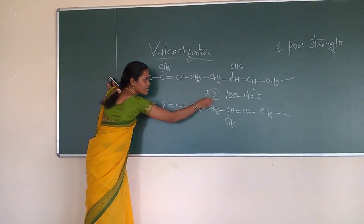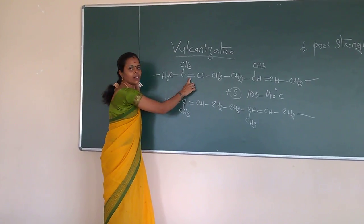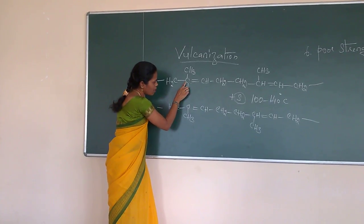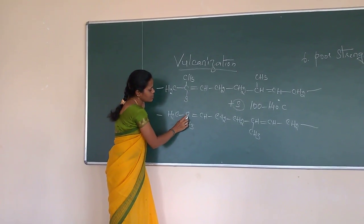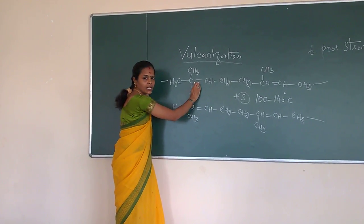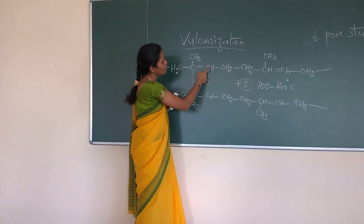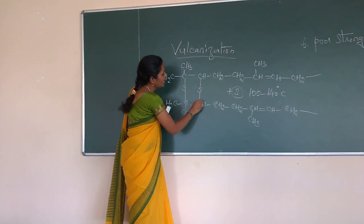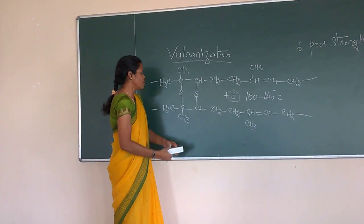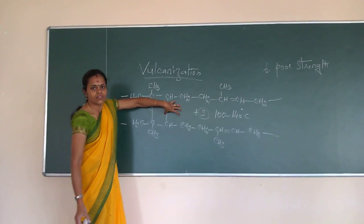Now this sulfur is getting attached with the two carbon atoms which is bearing the double bond. So where it will add? That it is added to this carbon which is bearing the double bond and this carbon which is bearing the double bond. So this double bond is getting converted into single bond and here also like that. So that again sulfur is getting added to the carbon which is bearing a double bond and it is added to the carbon which is bearing a double bond.